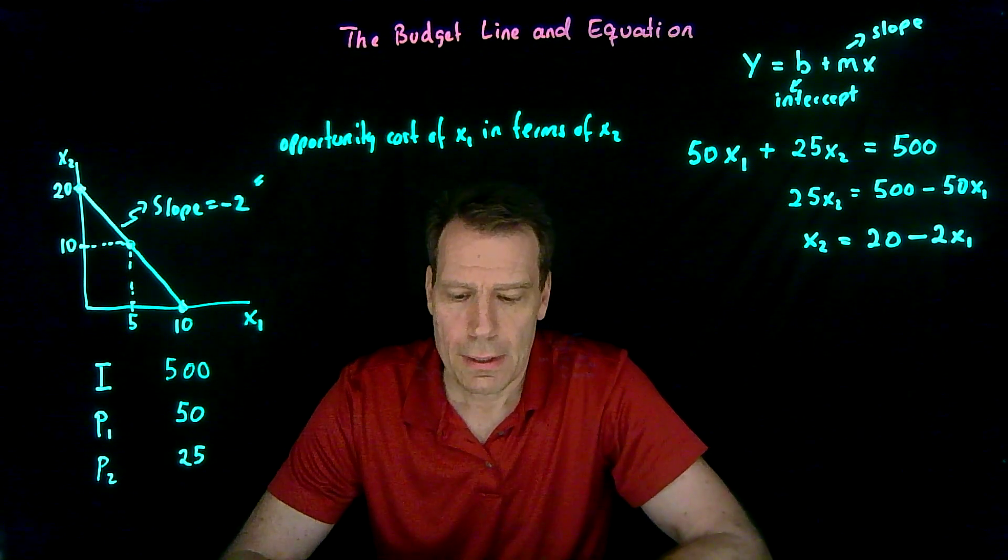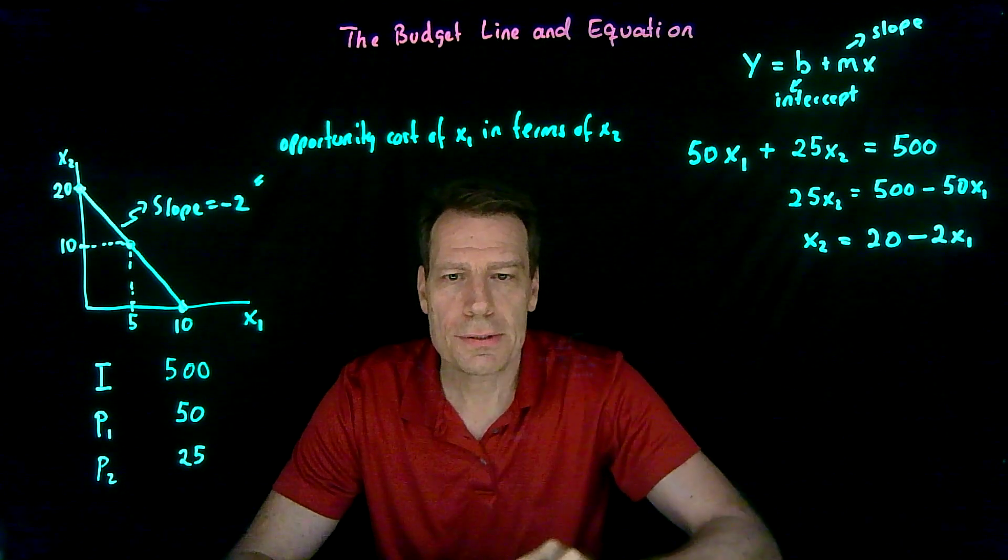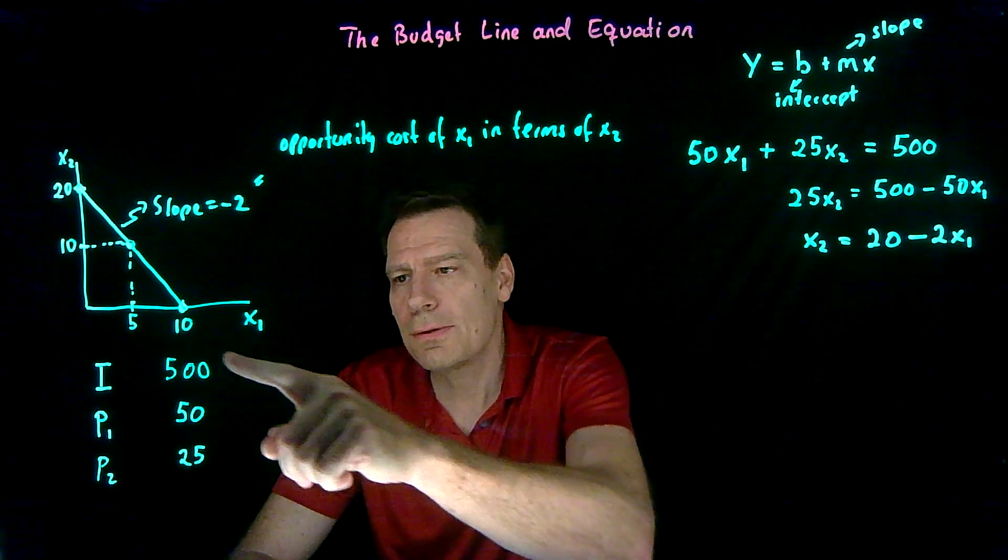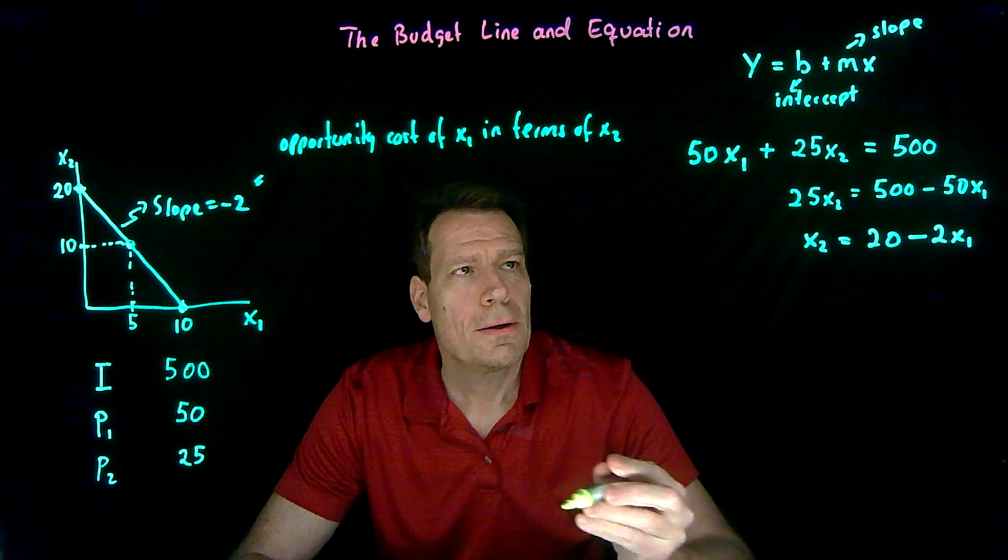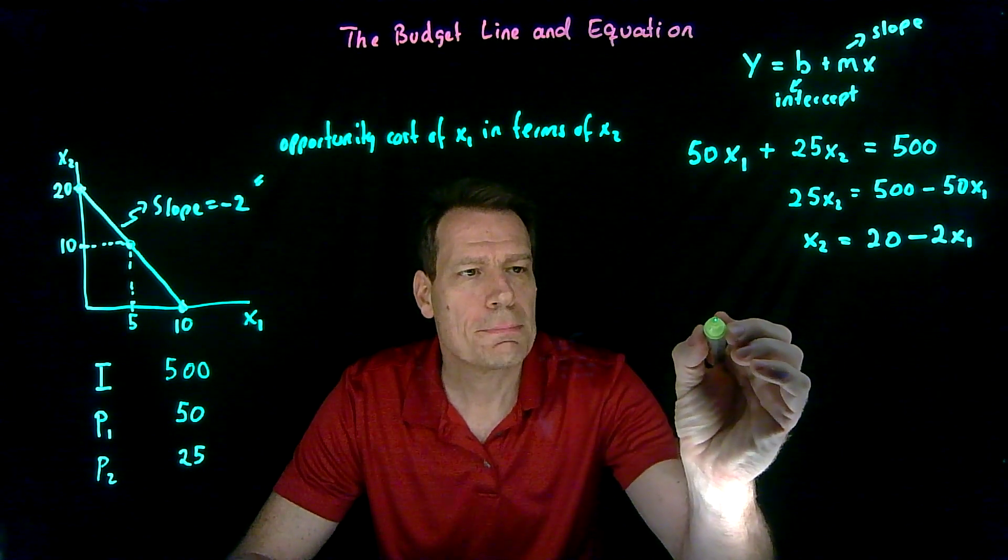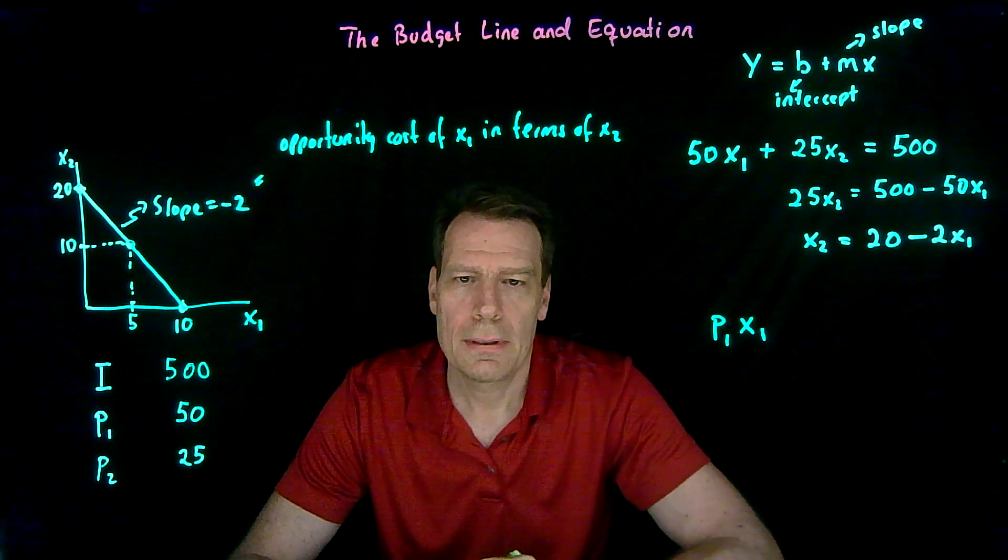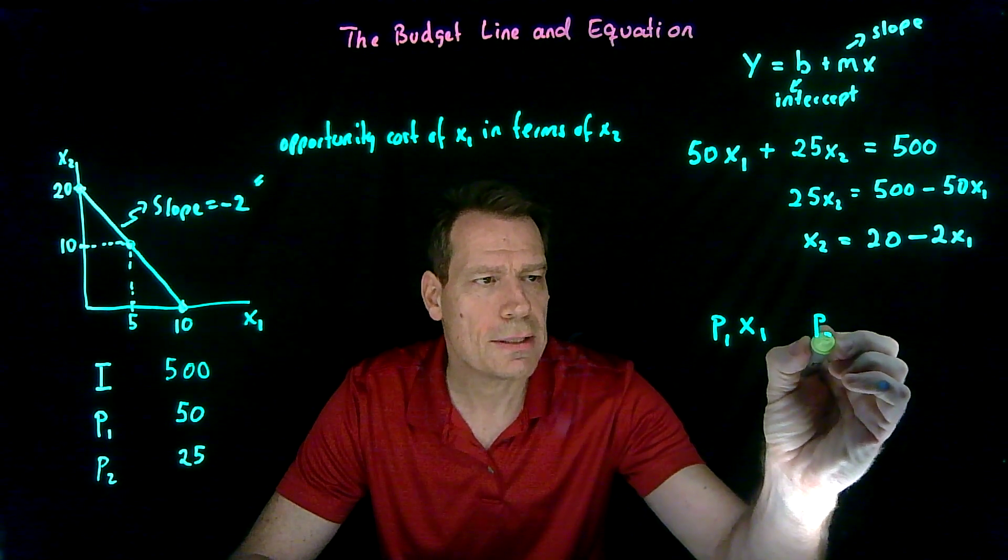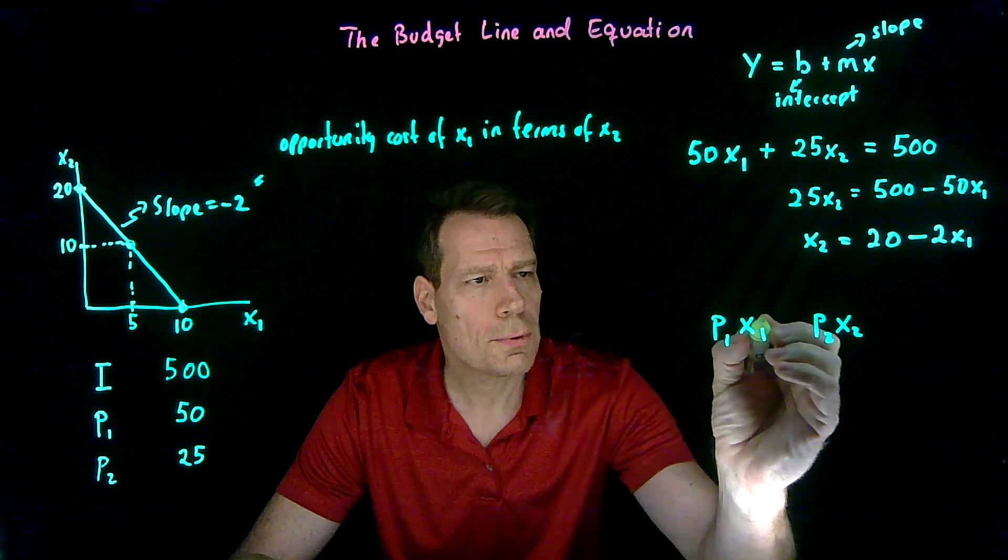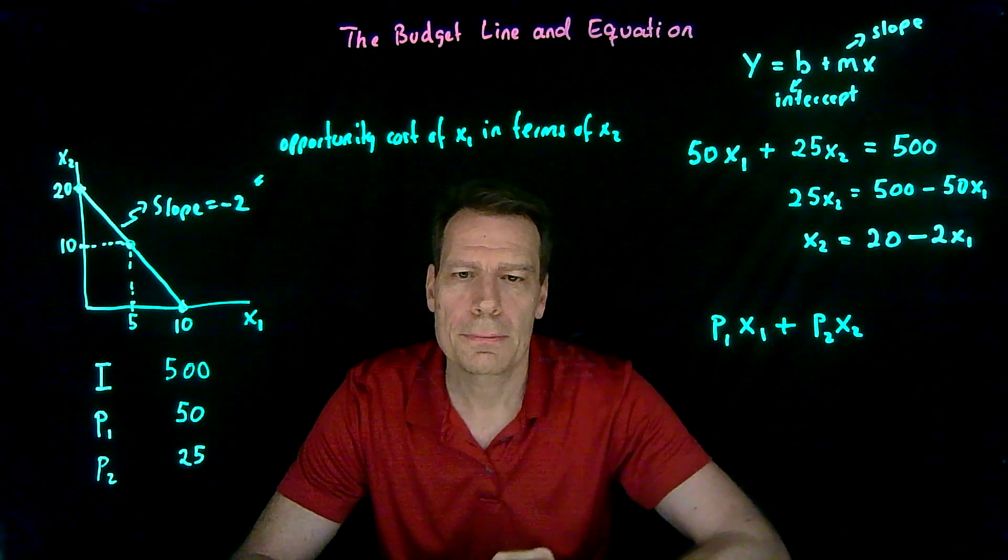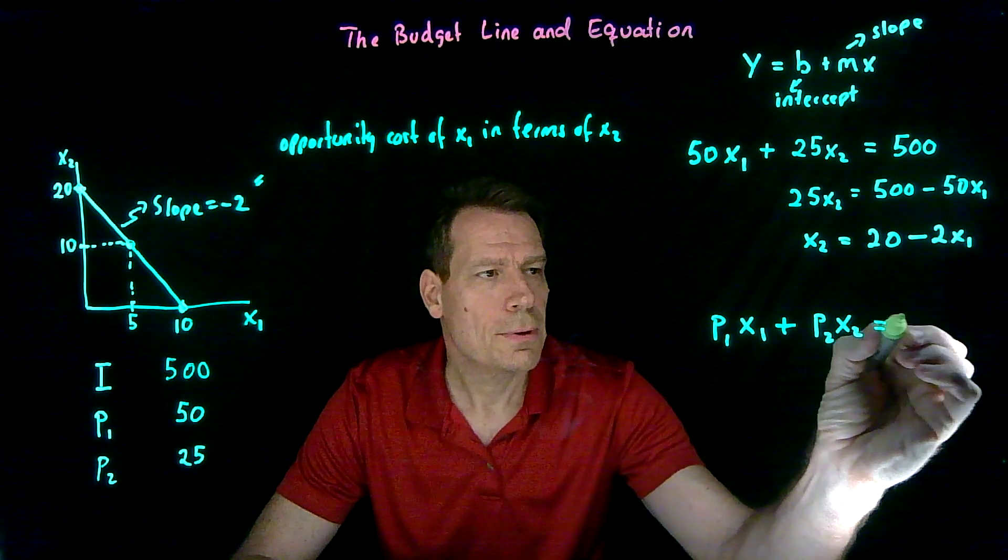Now more generally we can think of how we would write the equation, the budget equation, if we didn't know all of these things. So if we didn't know all of these things we would have to say your spending in good 1 is p1 times x1, and your spending on good 2 is p2, your price of good 2, times how much you buy of good 2. So your total spending is those two together, and that total spending on the budget line is going to be equal to your income.